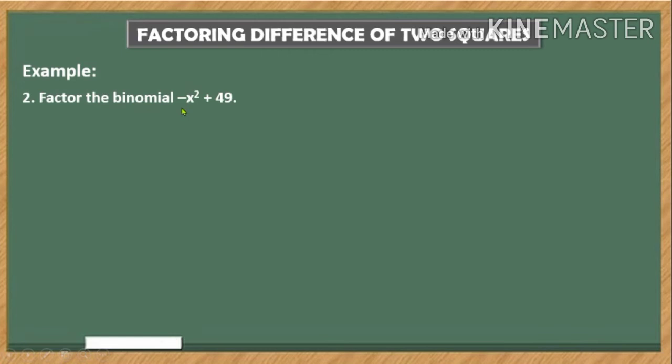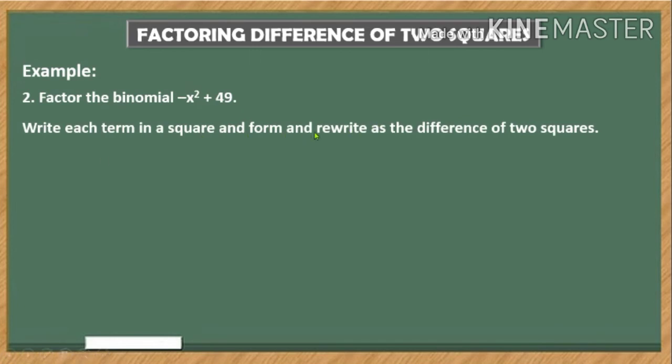For example number 2, we are going to factor the binomial -x² + 49. Now first we have to rewrite this expression as the difference of two squares. So instead of writing -x² + 49, we can write 49 - x². That is commutative property of addition.